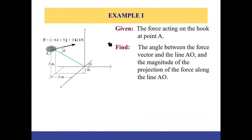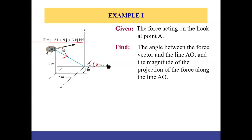Let's look at a problem where force F is given as a 3D Cartesian vector. We need to find the angle between force vector F and line AO. For AO we don't have a Cartesian vector, but we know the locations: O is at the origin (0, 0, 0), and A is at 1 meter along x, minus 2 along y, and plus 2 along z.